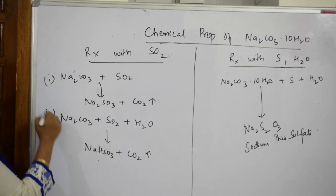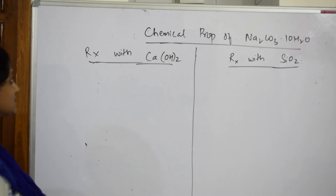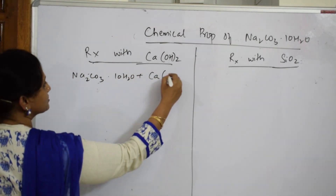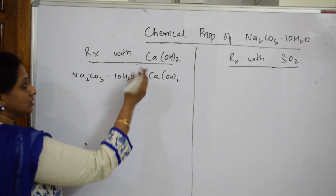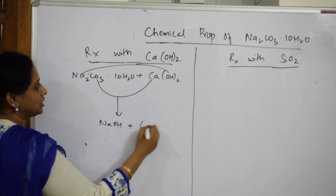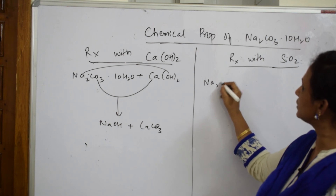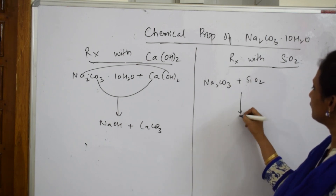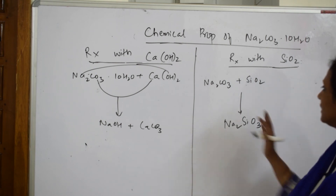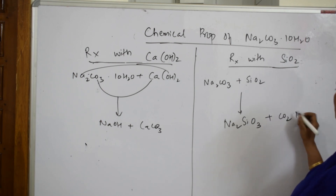Next, the reaction with calcium hydroxide: Na₂CO₃·10H₂O combining with Ca(OH)₂ gives calcium carbonate (CaCO₃) plus sodium hydroxide (NaOH) — a simple double displacement reaction, just balance it. When sodium carbonate reacts with silica (SiO₂), it forms sodium silicate (Na₂SiO₃) and carbon dioxide is released as the by-product.